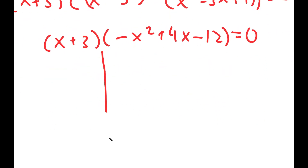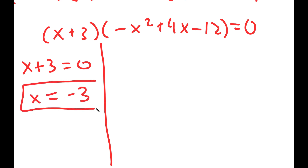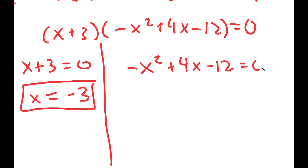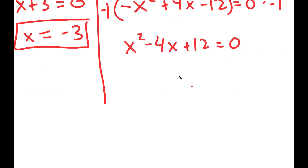So now from here, this gives me two equations. I get x plus 3 is equal to 0, meaning x is equal to negative 3. And negative x squared plus 4x minus 12 is equal to 0, which if I multiply both sides by negative 1, I get x squared minus 4x plus 12 is equal to 0.